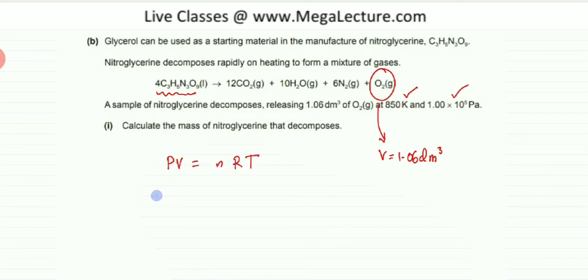Where pressure is given, it's 1×10⁵ Pascals. Volume is given, it's 1.06 dm³ but it should be in meter cube. So I am going to multiply it by 10⁻³. So that gives me in meter cube. Moles are not provided. R is 8.31. And the temperature is given in Kelvins, it should be in Kelvins, it's given as 850 Kelvins.